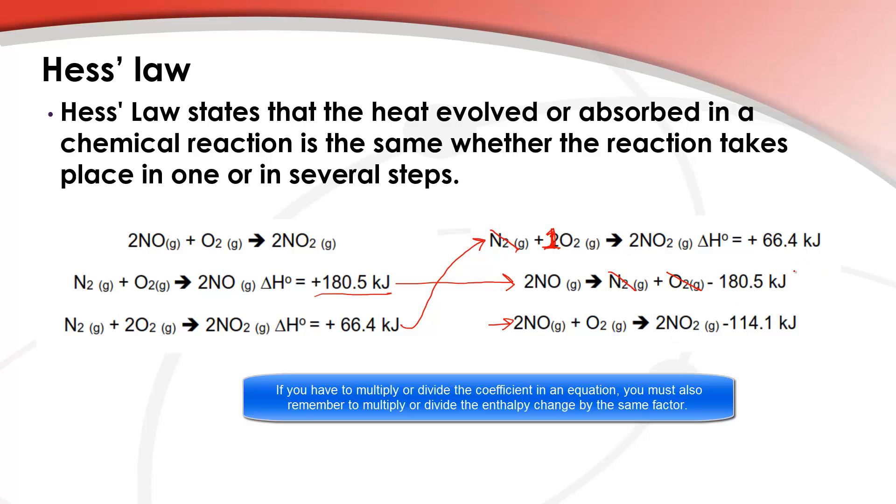So what we do now is we add up these enthalpy changes. Remember I reversed the sign on this one, so it's positive 66.4 kilojoules plus, and you have to put that in brackets of course, negative 180.5 kilojoules, and the enthalpy change for this reaction is negative 114.1 kilojoules.